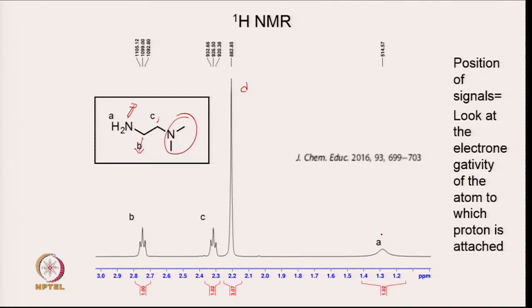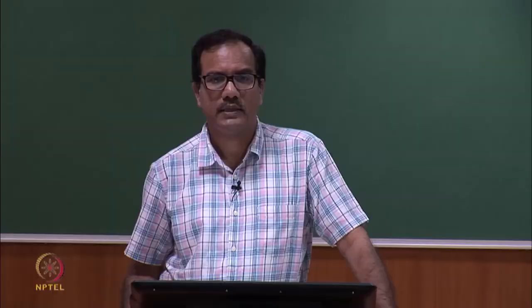Another feature to look at is splitting. For B and C, the two protons on one carbon will couple with the two protons on the adjacent carbon, so they will be split into three. Both B and C protons are expected to split into triplets. The CH3 groups (D) are not coupled to any nearby proton, so you expect a single peak. This is how you assign the peaks of the 1D NMR.